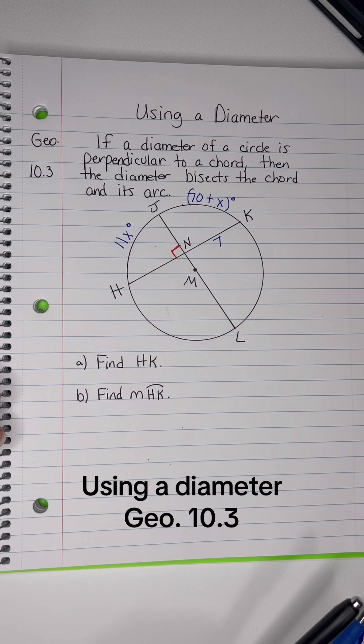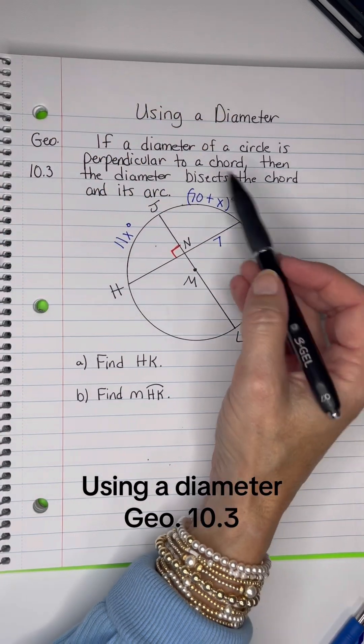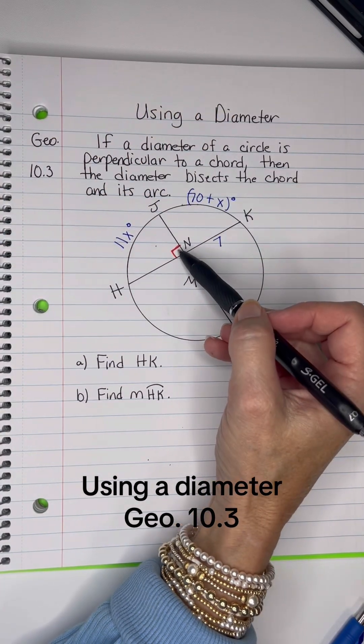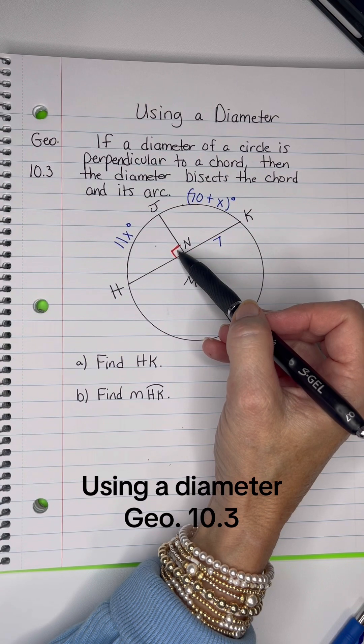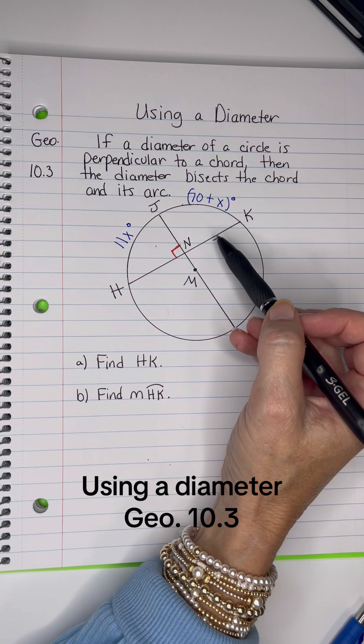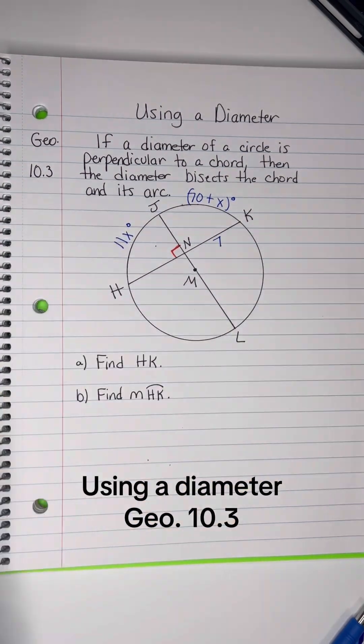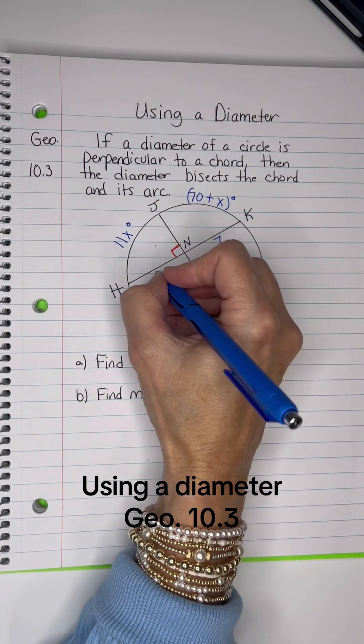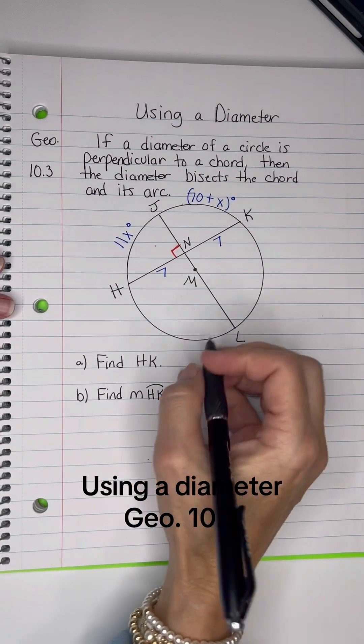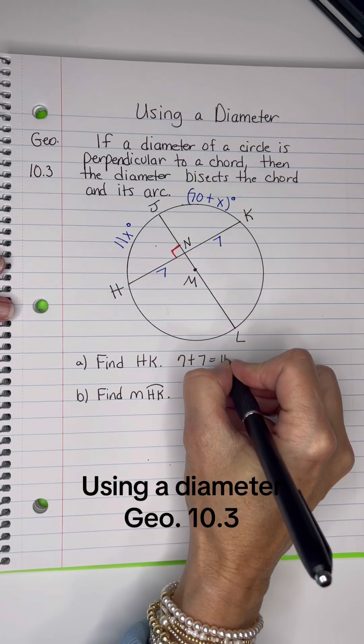Let's have a little bit of algebra here. The first part is the simple part. Since the diameter of the circle is perpendicular to the chord, I know if this side is 7 and it's bisected, then this side would also be 7. So HK would be 7 plus 7, which is 14.